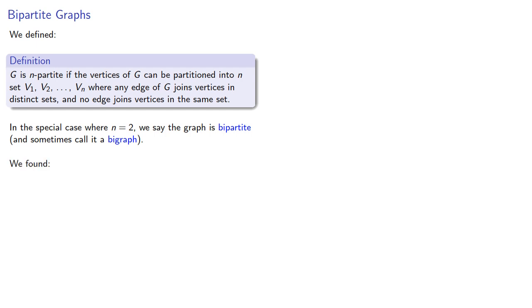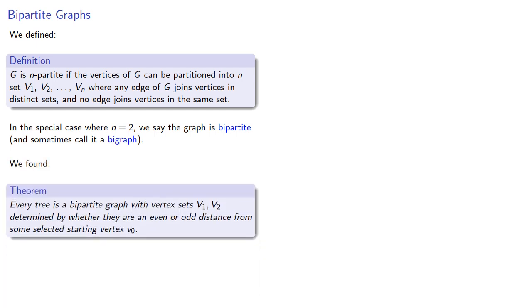We did find that every tree is a bipartite graph, where we could form the partition by determining whether a vertex is at an even or an odd distance from some selected starting vertex. We also found that if G is bipartite then every cycle has even length.